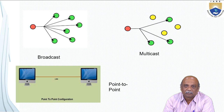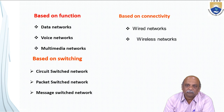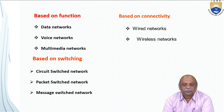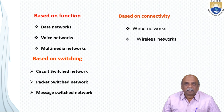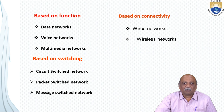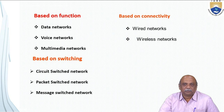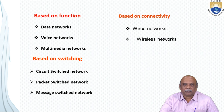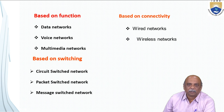Based on function, computer networks are classified into data networks, voice networks, and multimedia networks. In data networks, data is transmitted from source to destination. In voice networks, audio signals are transmitted. In multimedia networks, a combination of audio, video, and text is transmitted from source to destination.